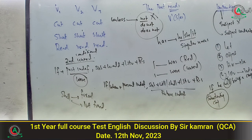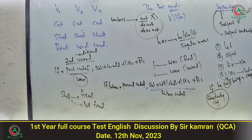Subordinating conjunctions کون سے ہیں؟ if، when، also، unless، until، because، since — یہ سارے subordinating conjunction ہیں۔ جب بھی subordinating conjunction ہو اور future کی طرف اشارہ ہو تو will یا shall کا استعمال نہیں کرنا — present indefinite use کریں۔